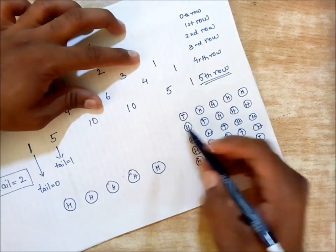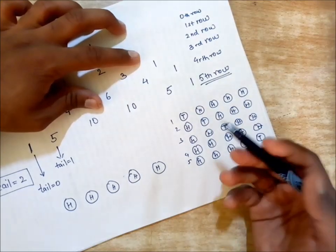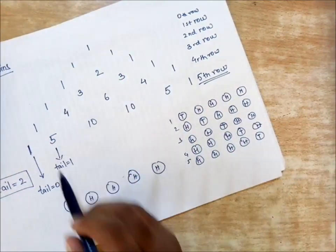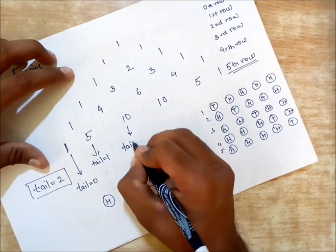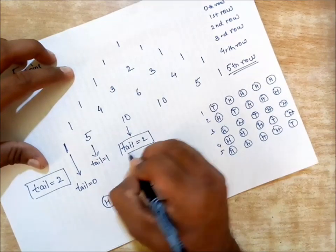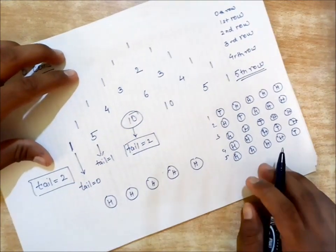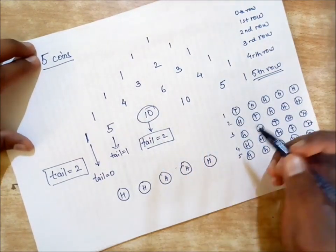You can see there are one, two, three, four, five possible combinations when we get only one tail. That's what we were getting here. This is what we need: when the tails are two, how many possible combinations are there? The answer is ten.